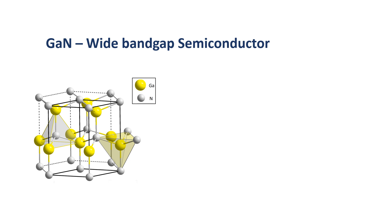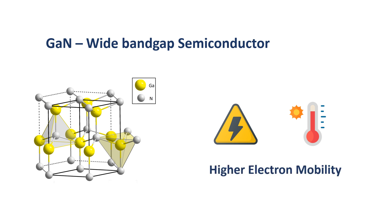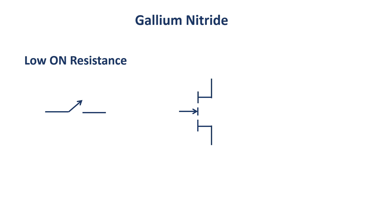Because of the wide bandgap, gallium nitride works more reliably than silicon at high voltages and high temperatures. Moreover, compared to silicon, gallium nitride has a higher electron mobility — which describes how quickly an electron can move through a material when pushed by an electric field. As a result, gallium nitride based transistors have a low ON resistance, meaning they offer less resistance than silicon when used as a switch in the ON condition, making them more efficient.